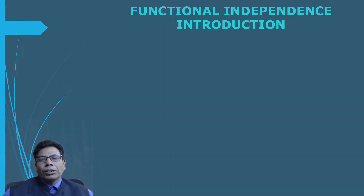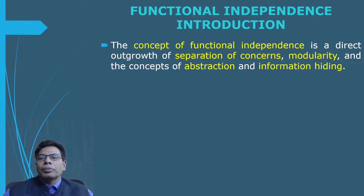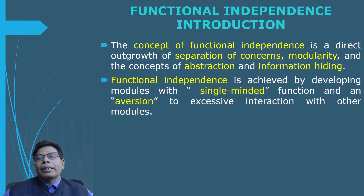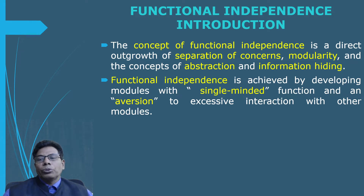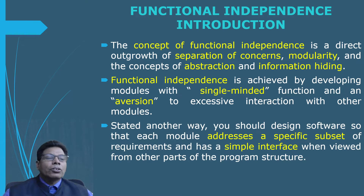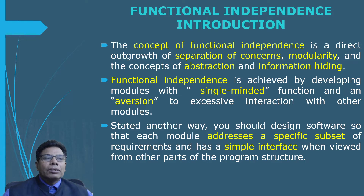Let us start with the functional independence introduction. The concept of functional independence is a direct outgrowth of separation of concern, modularity, and the concept of abstraction and information hiding — all concepts we have learned in the previous videos. Functional independence is achieved by developing modules with a single-minded function and an aversion to excessive interaction with other modules. The module should have a single-minded function and a strong dislike to excessive interaction — meaning it should not interact much with other modules. You should design software so that each module addresses a specific subset of requirements and has a simple interface when viewed from other parts of the program structure.